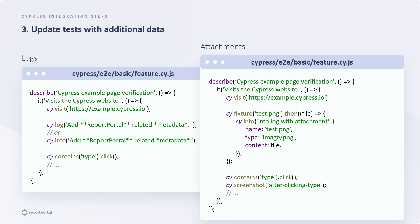Regarding attachments, they can be reported using the same commands as logs but with the file included. Here we simply need to specify the content, the file itself, its content type, and the desired name. Screenshots generated by Cypress, including those captured for failed tests, will be automatically attached. Let's look at how this is implemented in the code.